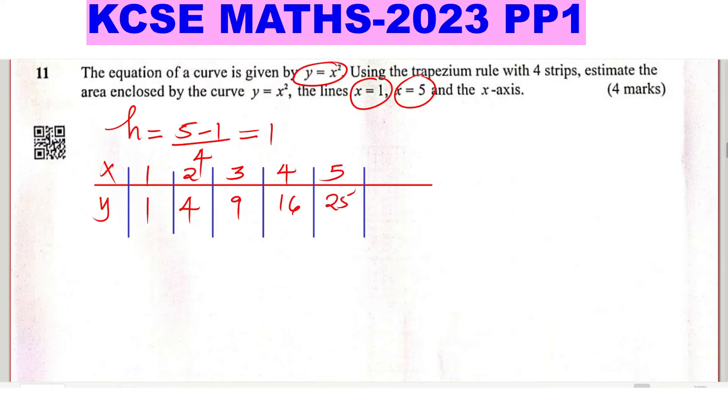You can call these the first value of y to be y₀, this is y₁, this is y₂, this is y₃, this one is y₄. We are using the trapezium rule, so area using the trapezium rule is given by this formula: half height, then the first height y₀ plus the last which is y₄.